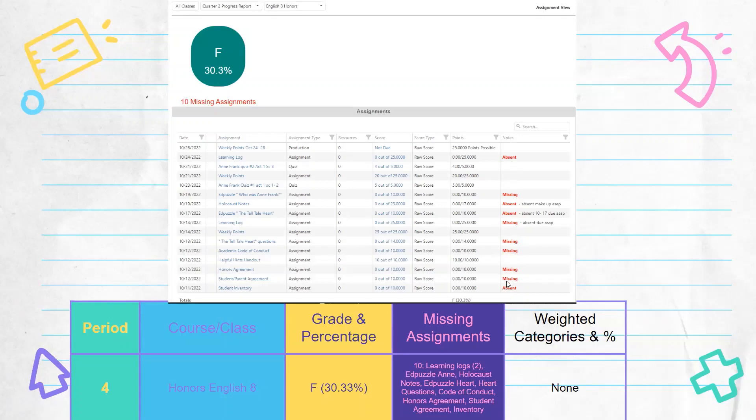Don't just count them students. If you are missing, look at the title. So if I toggle over here, I see that the learning log is missing. So we have that typed in learning log. This student is actually missing two. So I just put two learning logs. And then short abbreviated, I put Ed Puzzle and Frank, Holocaust notes, Ed Puzzle for heart, heart questions.